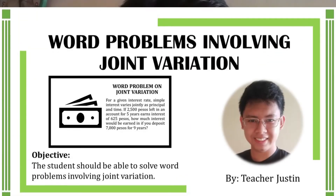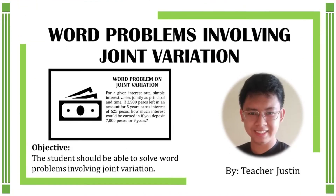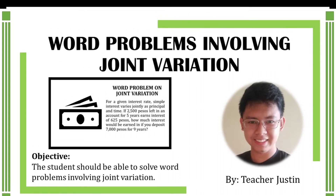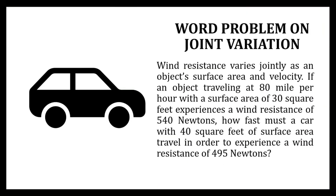Good day everyone, welcome to Math with Teacher Justin. On today's topic we're going to talk about solving word problems involving joint variation. Let's have our example: wind resistance varies jointly as an object's surface area and velocity.